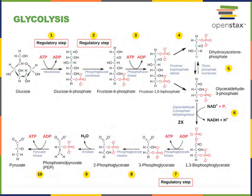The ninth step of glycolysis is catalyzed by the enzyme enolase and converts 2-phosphoglycerate to phosphoenolpyruvate and water. The final step is catalyzed by pyruvate kinase and transfers a phosphate group from phosphoenolpyruvate onto ADP, forming ATP and the final product pyruvate. This reaction occurs twice per glucose, giving us a net of 2 ATP produced at the end of glycolysis, in addition to two NADH molecules and two pyruvate molecules.